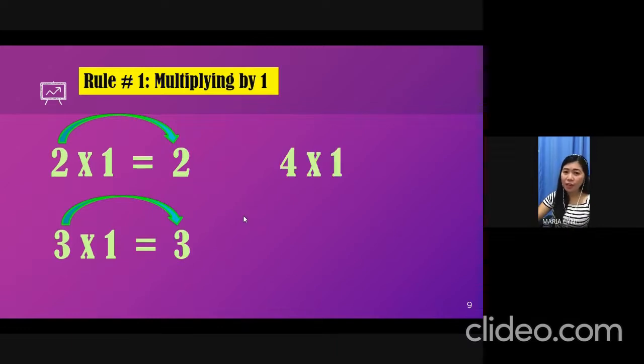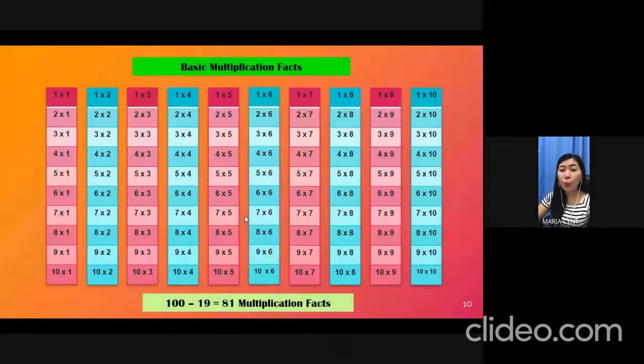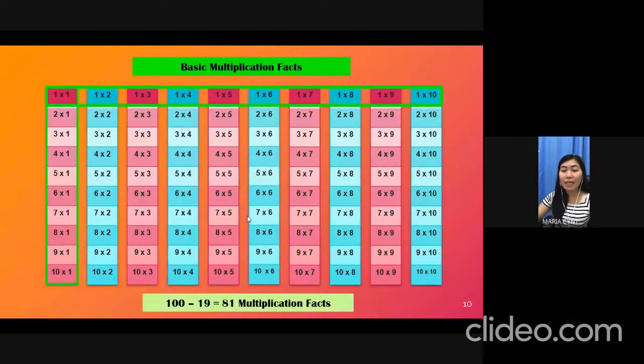4 times 1, what do you think is the answer? You're right! The answer is 4. And for the last example, 5 times 1, the answer is, exactly, it's 5. Now, from that one simple rule, you'll know 19 multiplication facts. So, you have 81 multiplication facts remaining.